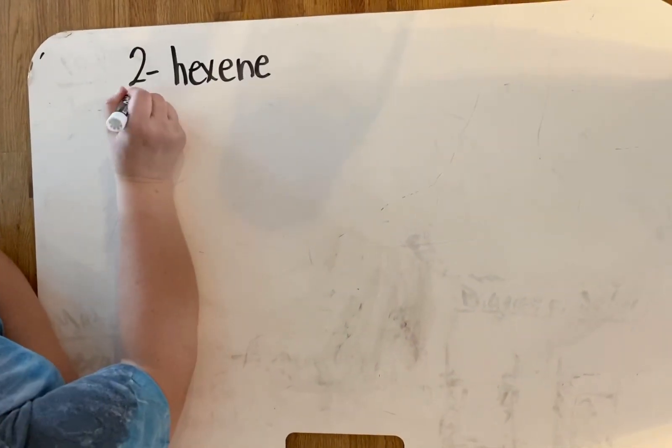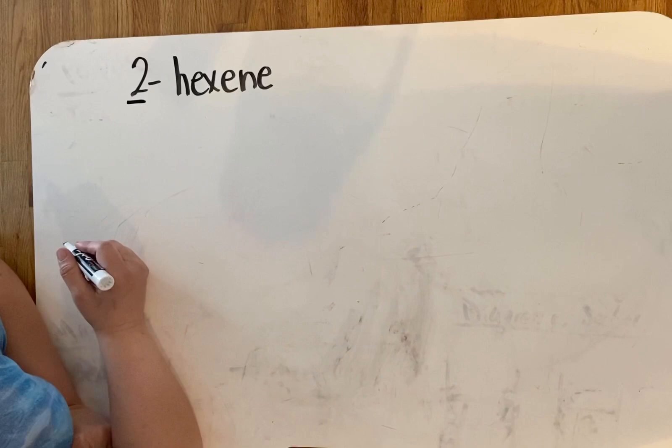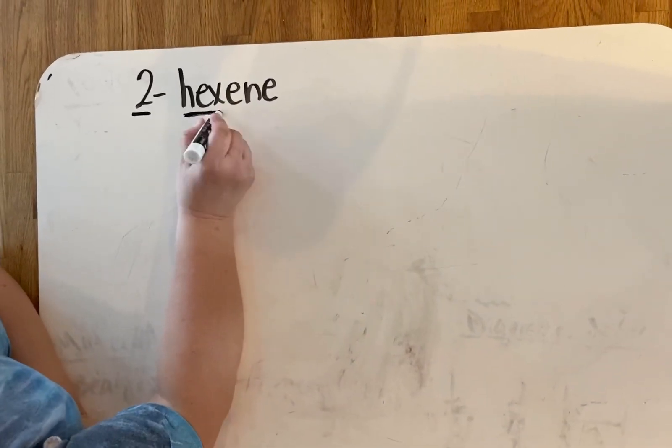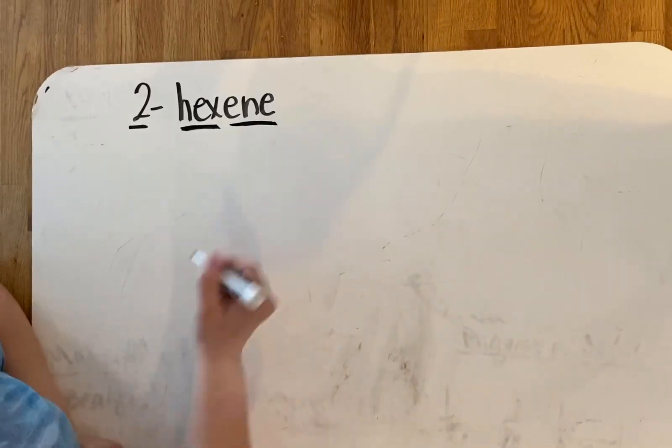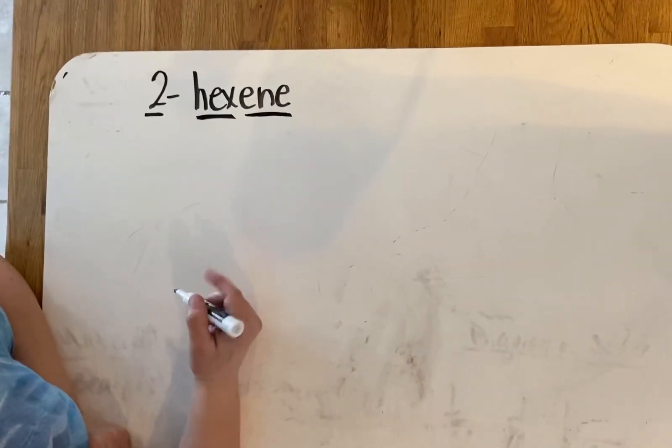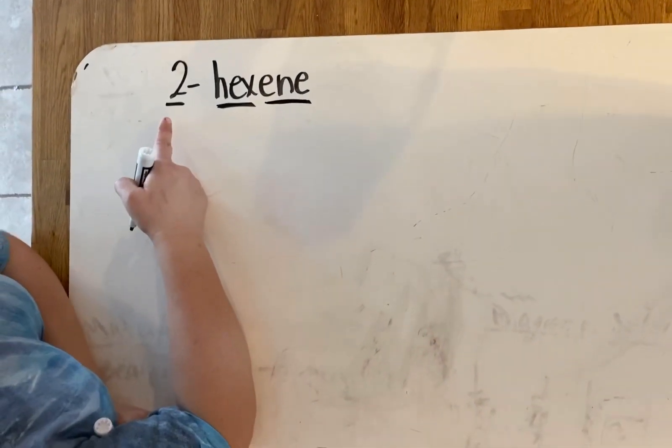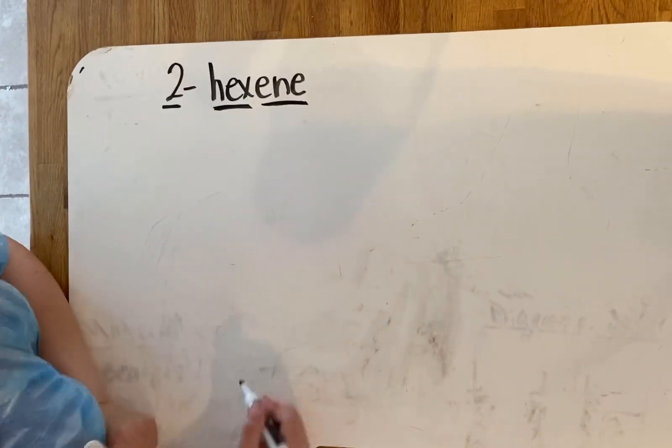The two is telling me there's something on carbon number two. If I continue on, I know this hex tells me there's a total of six carbons and this -ene is telling me that there is a double bond, and that double bond must be on carbon number two because that's the special location I'm finding out about.